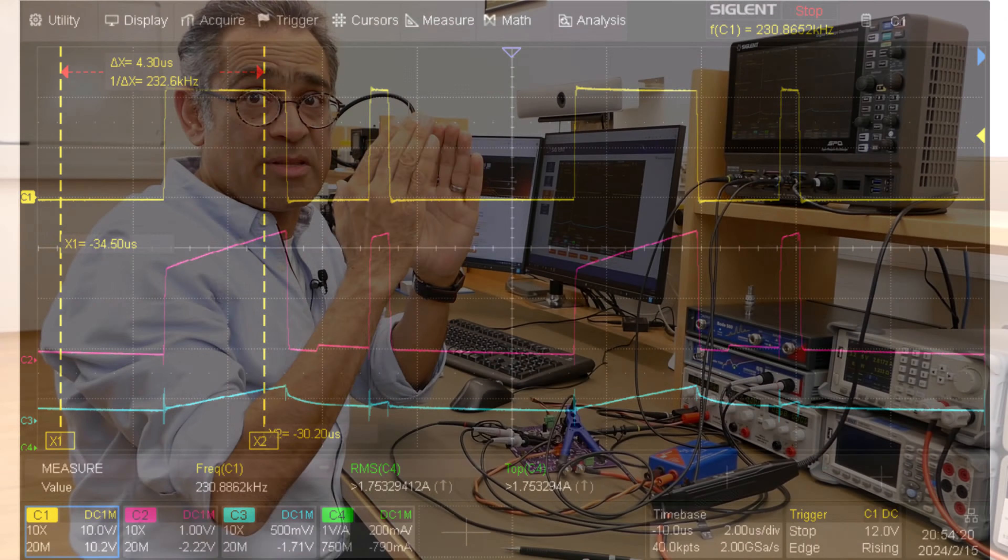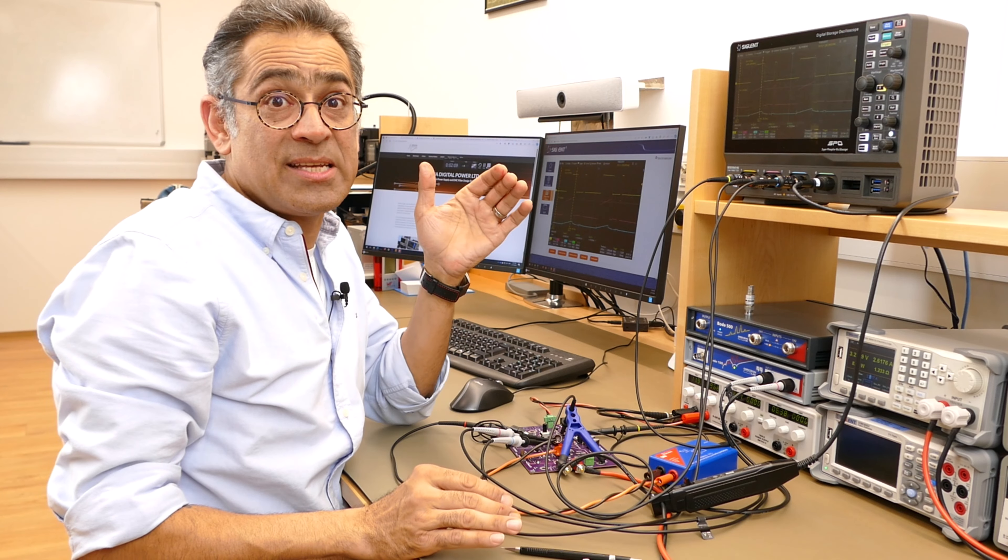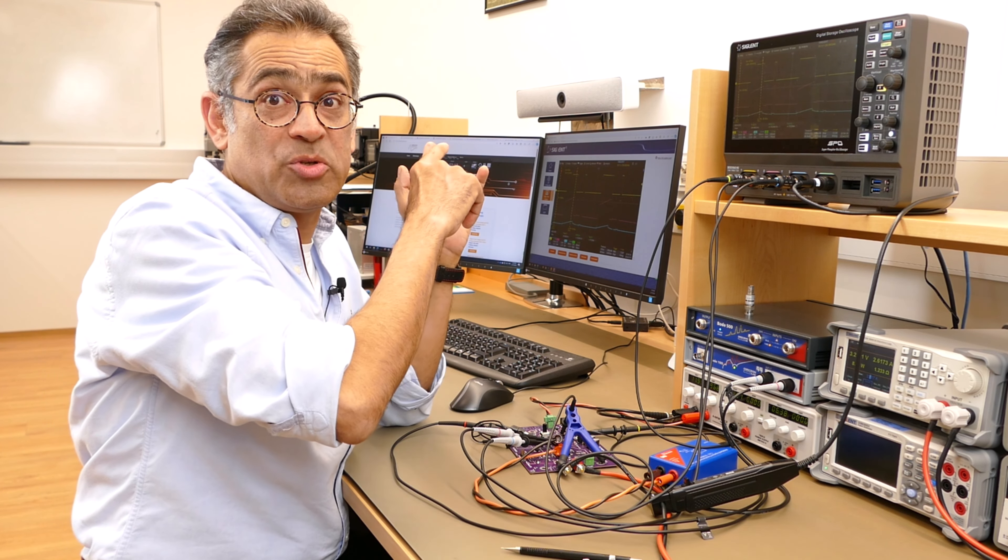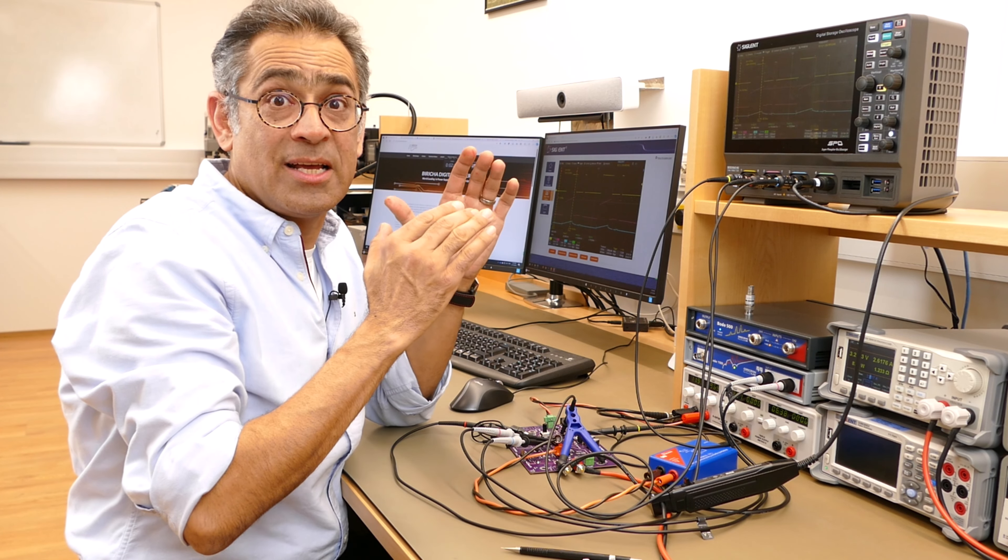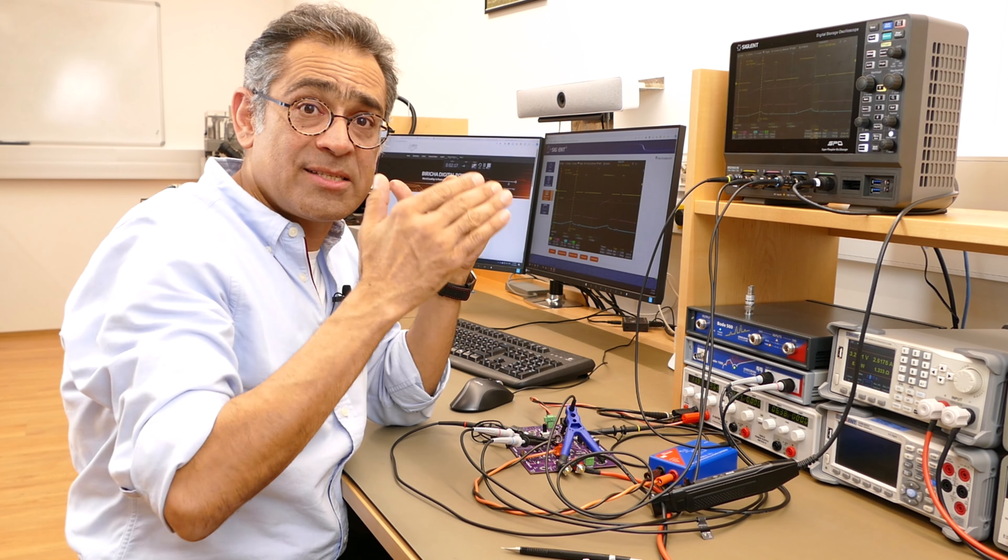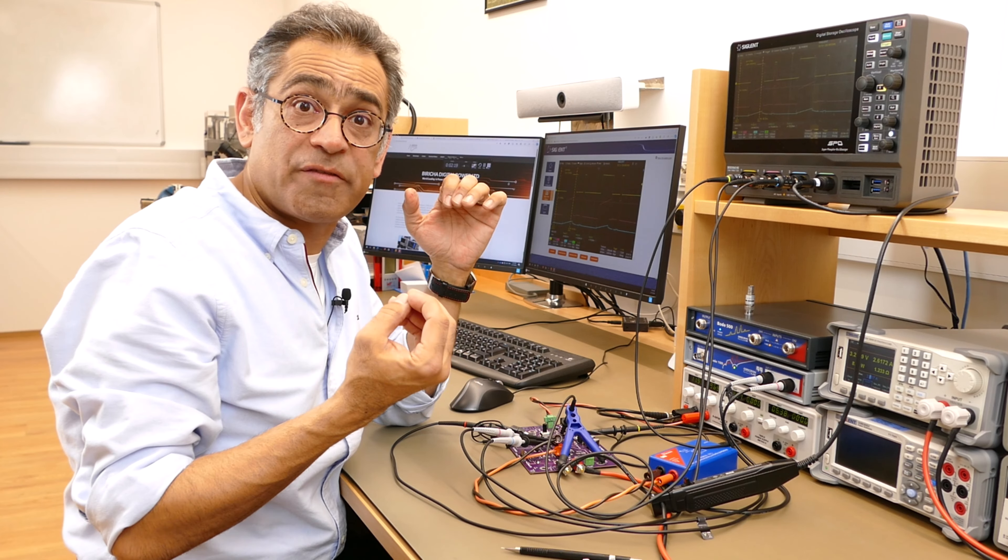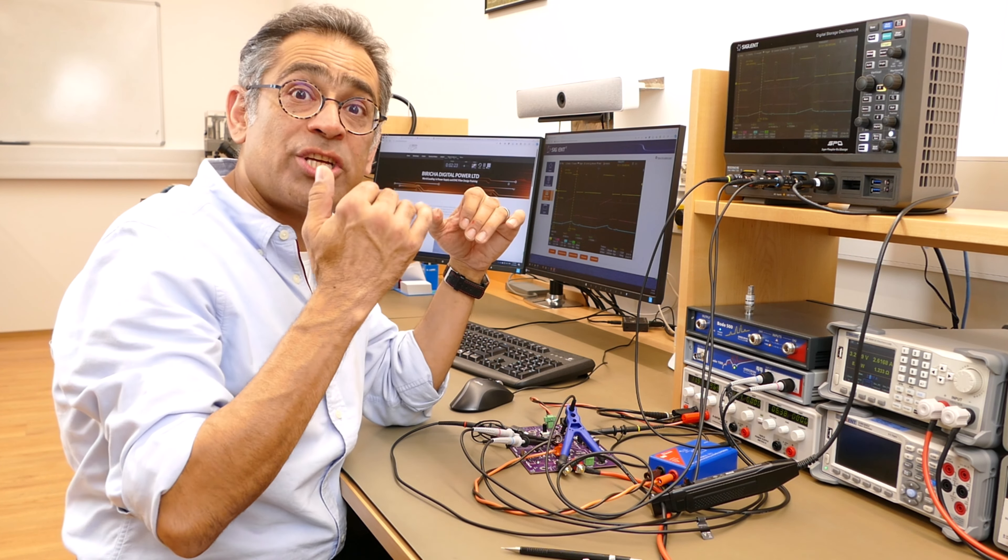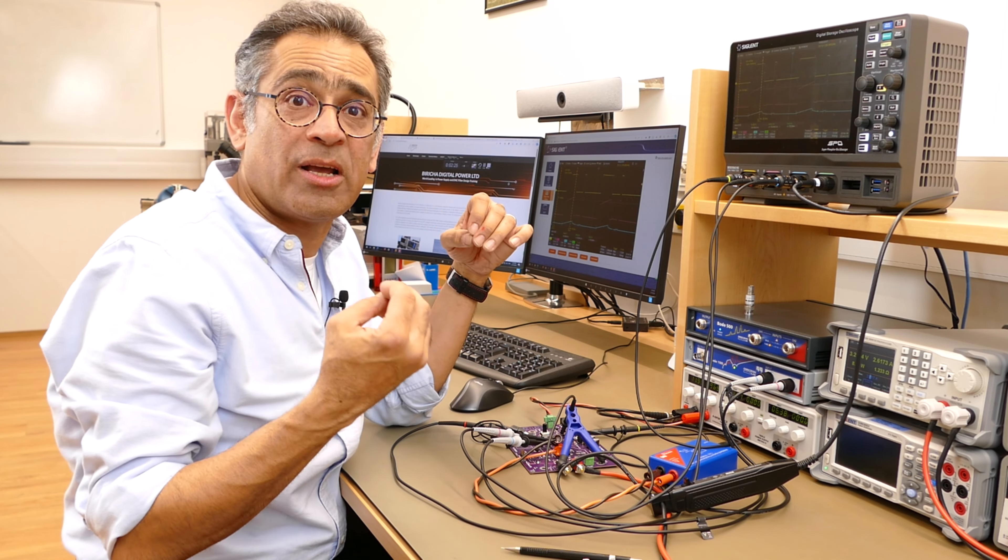And you see subharmonic oscillations clearly here, thick pulse, thin pulse, thick pulse, thin pulse. Now this can be seen on the frequency domain. So what we're going to do now is we're going to go to the computer and we're going to show this on frequency domain as a resonance at half the switching frequency and how adding and subtracting the ramp changes the Q and therefore the damping of this resonance.